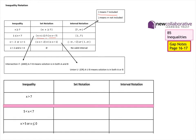The fourth example states we want values of X less than two and greater than four. We can't have values that are simultaneously less than two and greater than four, so there is no valid interval. In set notation we use the empty set symbol — a circle with a line through it — meaning there are no valid values for that set.